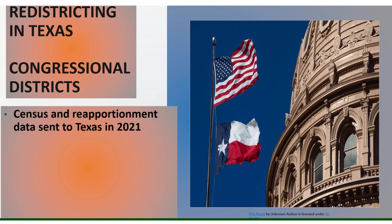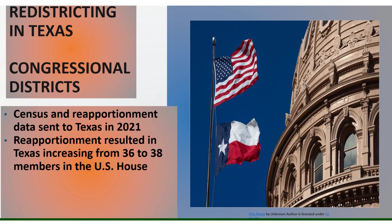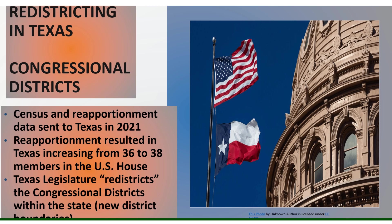The census and reapportionment data was sent to Texas in 2021. Because of the pandemic in 2020, everything was slowed down — Texas actually had to delay and call a special session of the legislature to get redistricting done, because the federal government was slow in getting census data to the states. Eventually the census data made it to Texas, the federal government told Texas it had two more seats, and reapportionment resulted in Texas increasing from 36 to 38 members of the U.S. House. Texas got to work redrawing its districts.